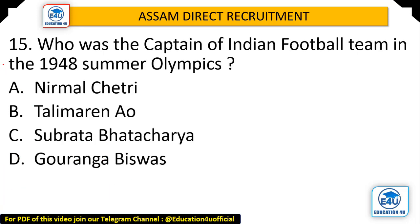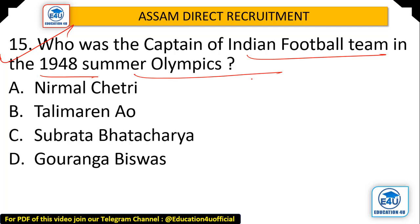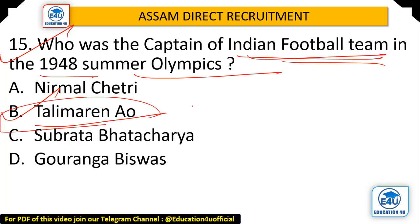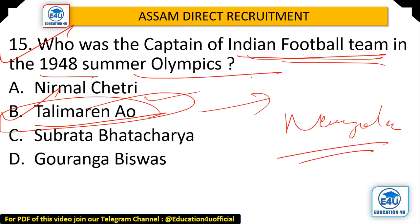Last question: Who was the captain of the Indian football team in the 1948 Summer Olympics? Options: Nirmal Chhetri, Talimaren, Subrata Bhattacharya, Gauranga Biswas. The answer is Number D — Talimaren. He belongs to Nagaland and was the captain of the Indian football team at the 1948 Summer Olympics.